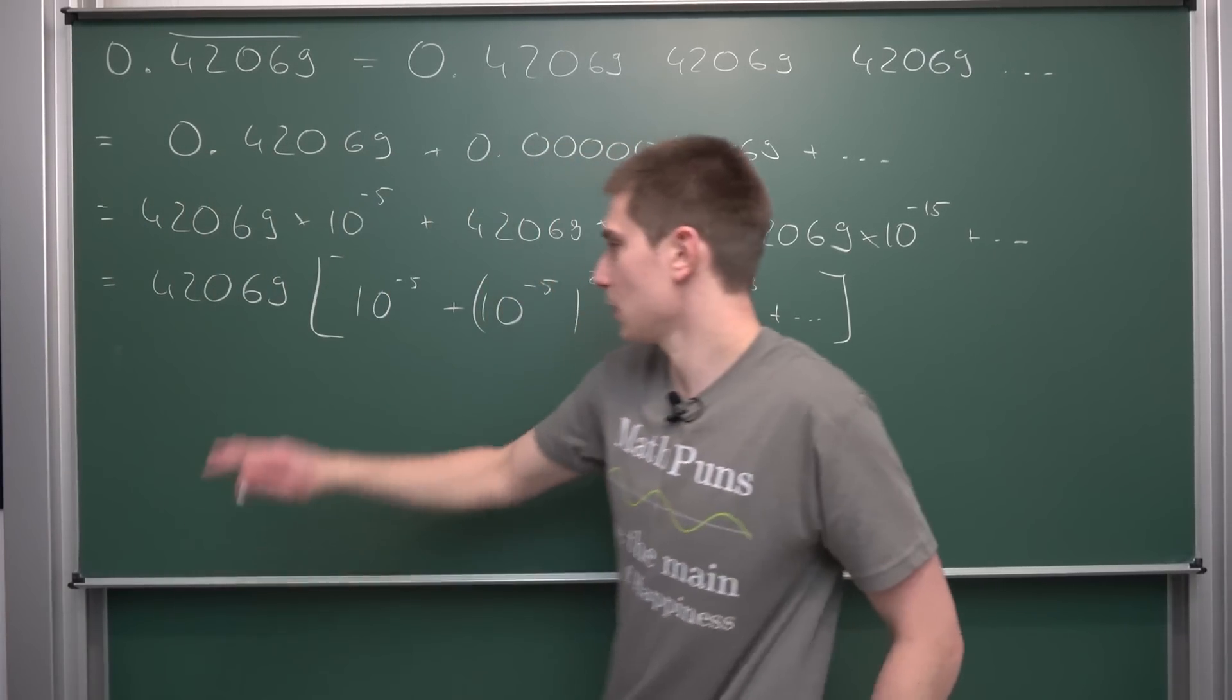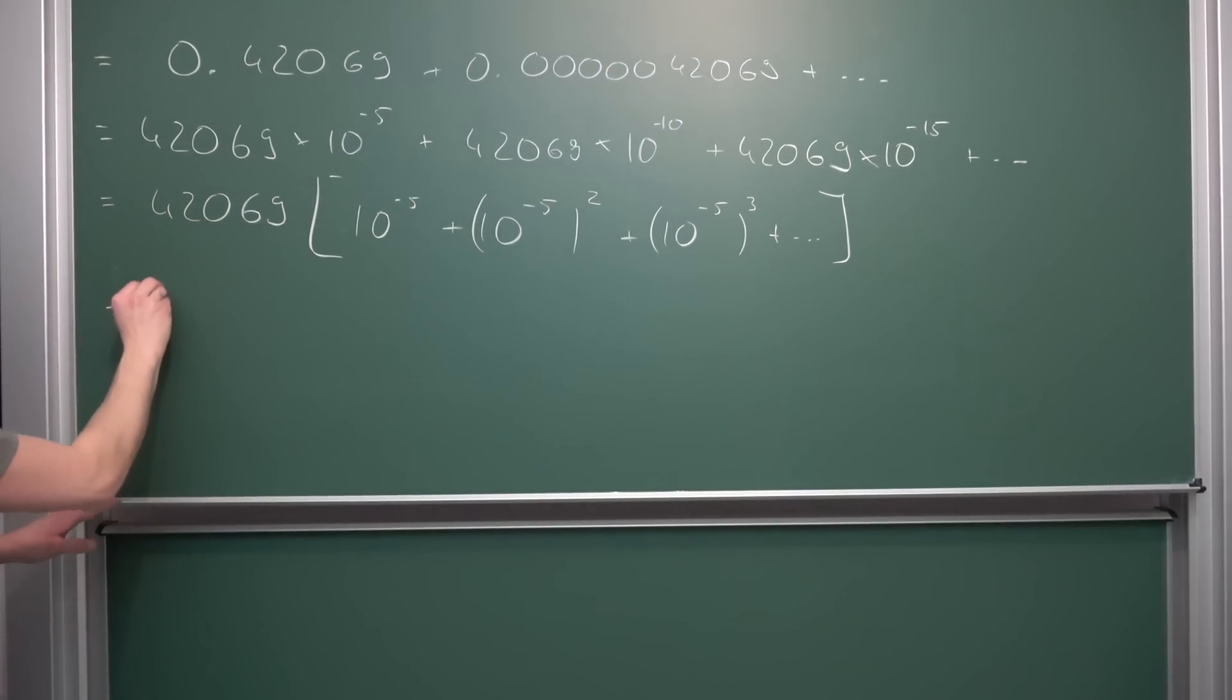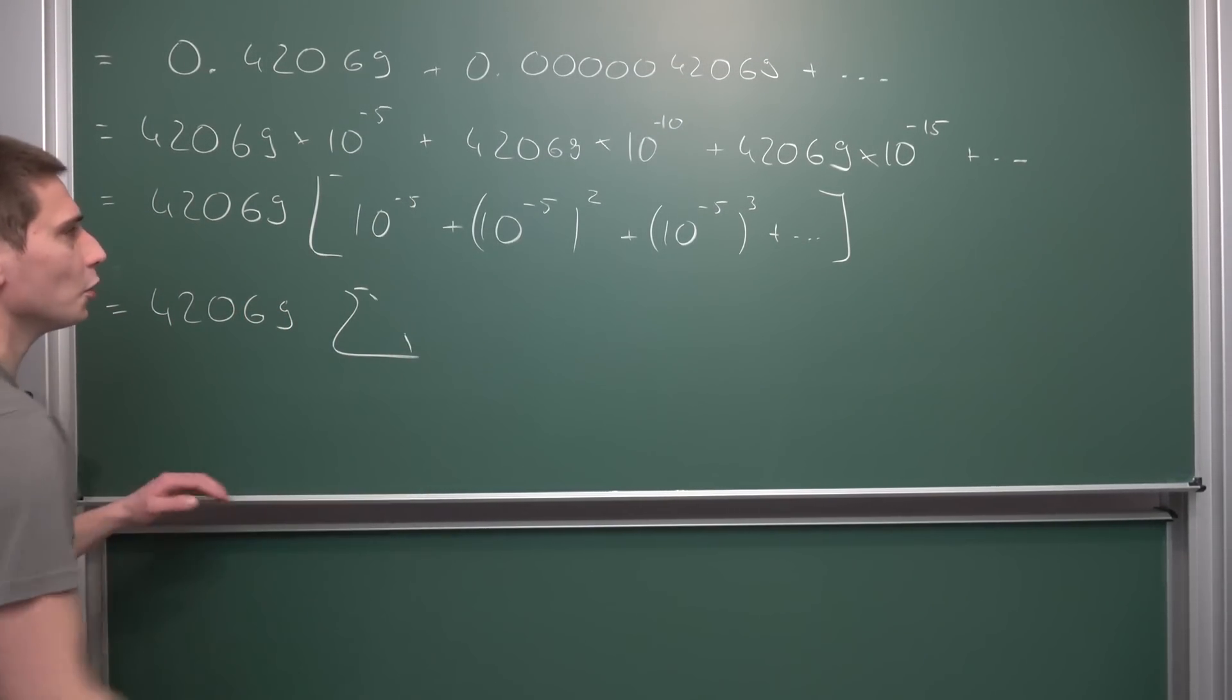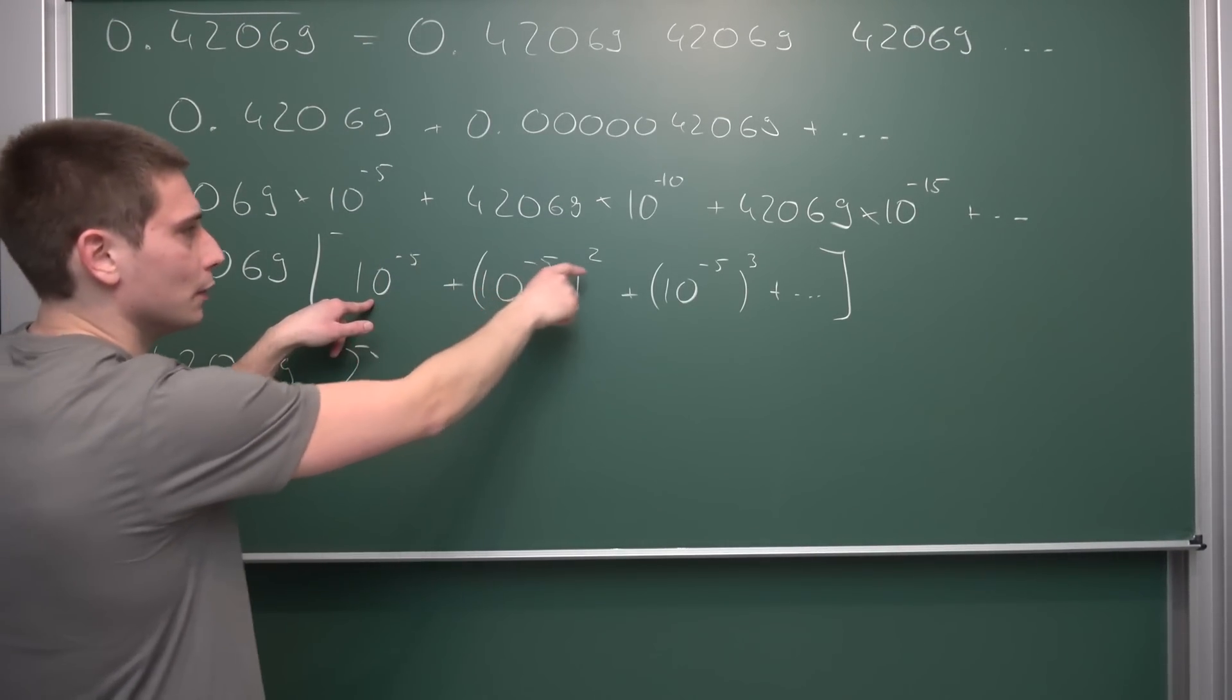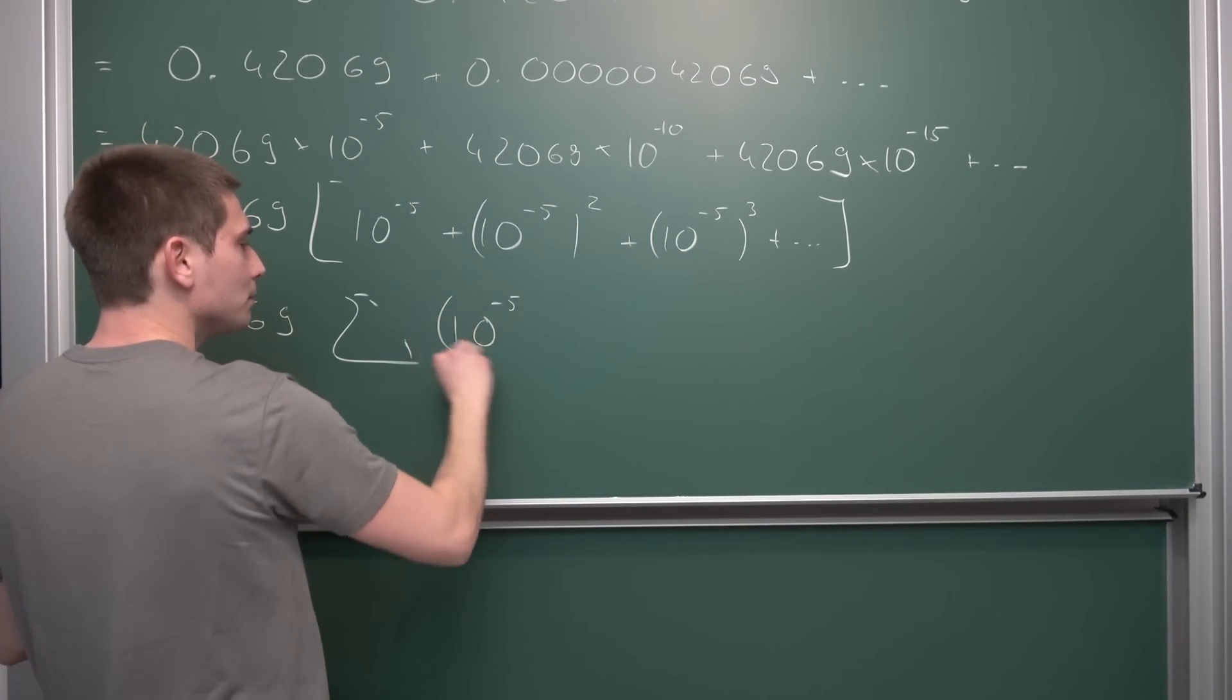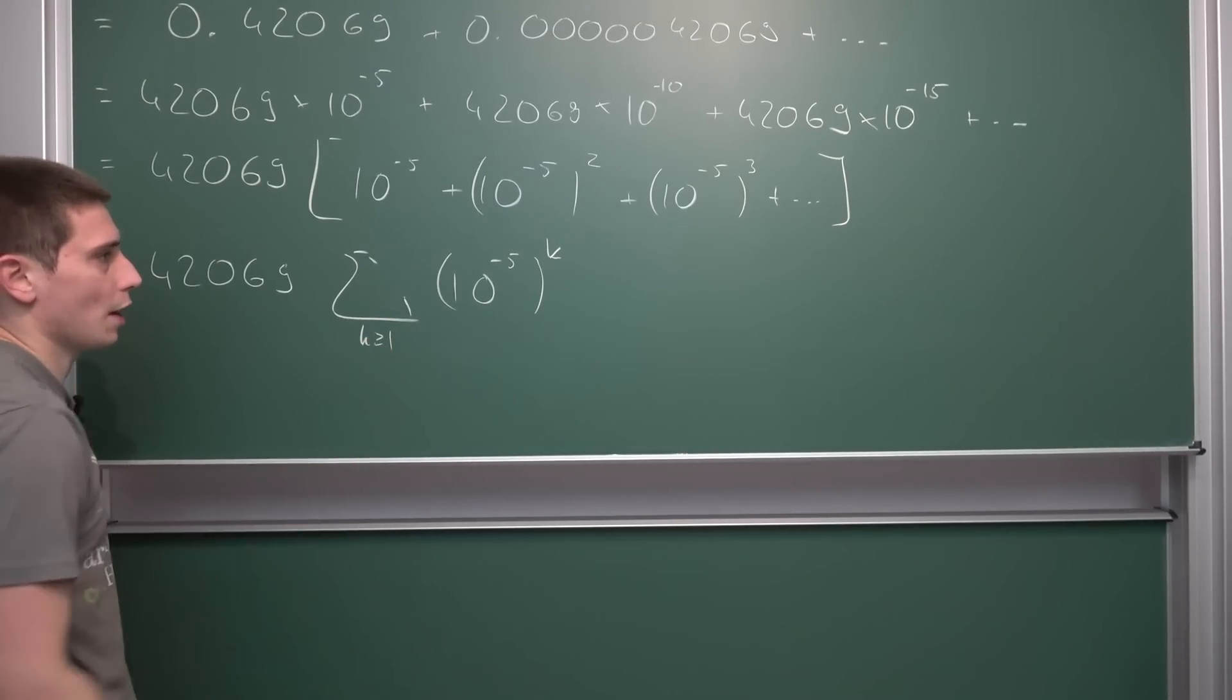Well, this is good, right? This is just a series of powers of 10 being added together. Meaning, this can be expressed as 42069 times the infinity sum, where we got 10 to the negative 5th power to the kth power, but our running index starts at 1, so k being greater or equal to 1.